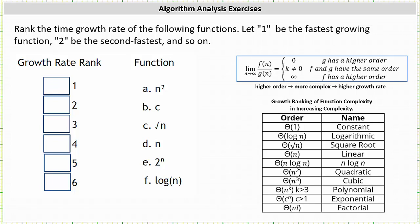We could answer this question two ways. We could compare two functions at a time using the limit as n approaches infinity of f(n) divided by g(n), and the result of the limit will indicate whether f(n) or g(n) has a higher order and therefore more complex.